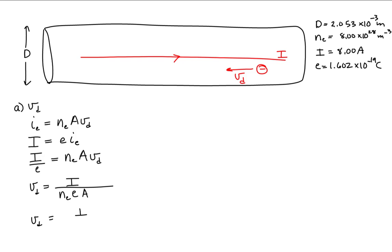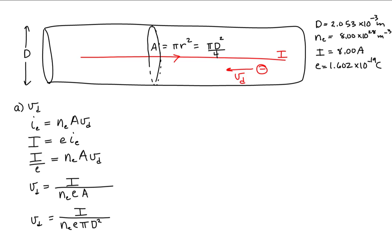We assume the wire is cylindrical, so the cross-sectional area is pi times the radius squared, which equals pi times the diameter squared over 4. Substituting this into the drift speed expression, the 4 comes up into the numerator. So our final expression for drift speed is: v_d equals 4I divided by the number density times e times pi times the diameter squared.